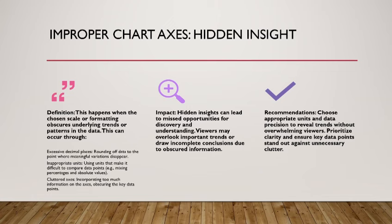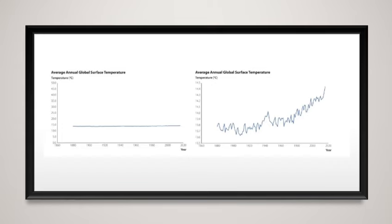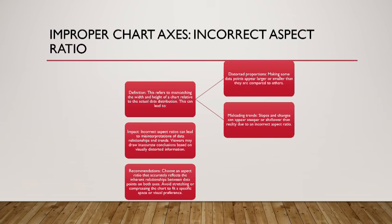Improper chart axes: ink aspect ratio. Definition: this refers to mismatching the width and height of a chart relative to the actual data distribution. This can lead to distorted proportions, making some data points appear larger or smaller than they are compared to others. Misleading trends: slopes and changes can appear steeper or shallower than reality due to an incorrect aspect ratio.